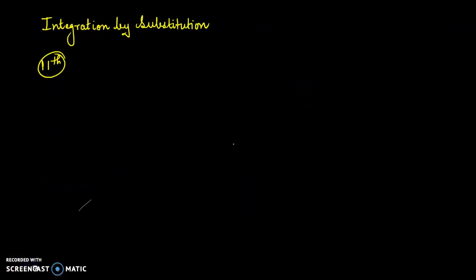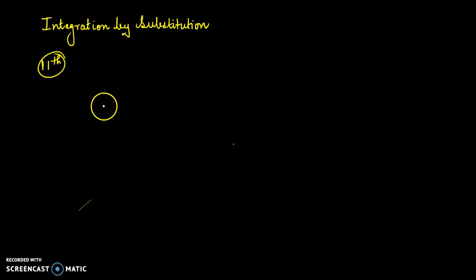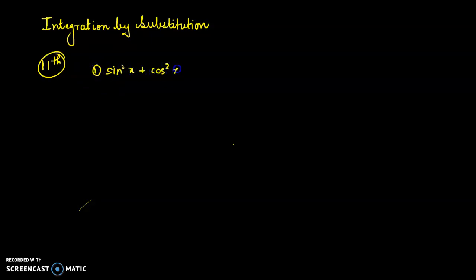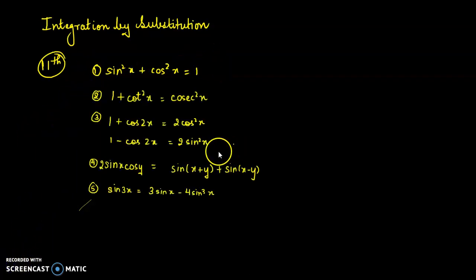Substitution is very important in integration questions. You must revise all the trigonometric identities from class 11. Take out your book and note down those formulas in a separate formula notebook. For instance, sin²x + cos²x = 1. When you do integration questions, you will come to know where to substitute.